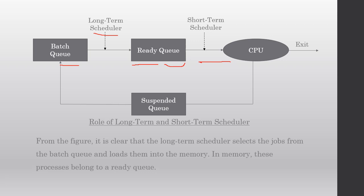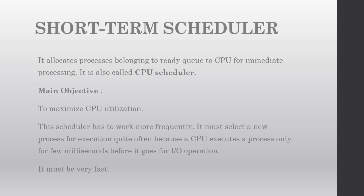Let's discuss short term schedulers now. Short term schedulers take the processes which are in the ready queue and allocate them to the CPU for execution. They are also called CPU Schedulers. Their main objective is CPU utilization. Short term schedulers are very fast and they work very frequently, because when a process in the ready queue is allocated the CPU, the CPU can execute just a few milliseconds worth of work. That's why short term schedulers must function frequently and fast to enhance CPU utilization.